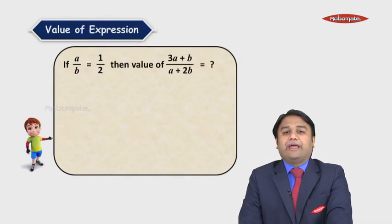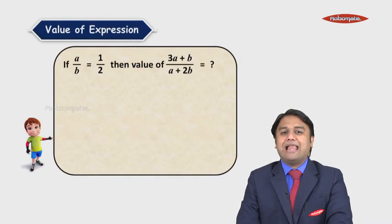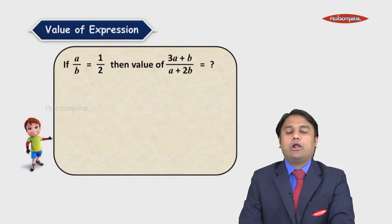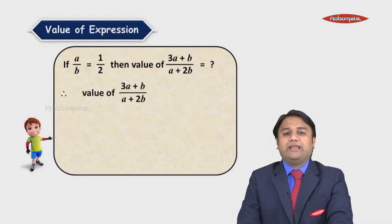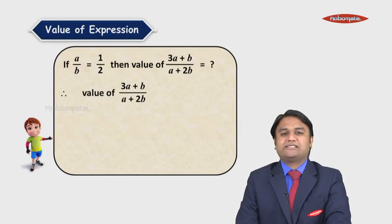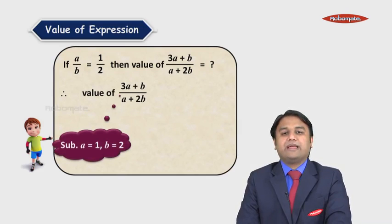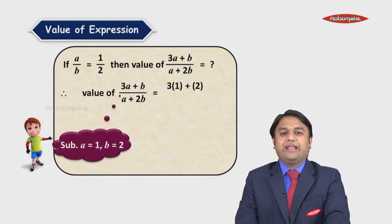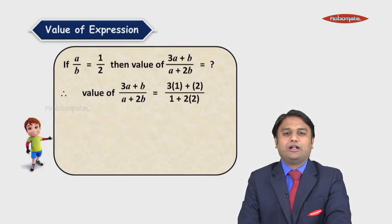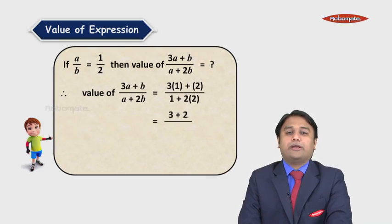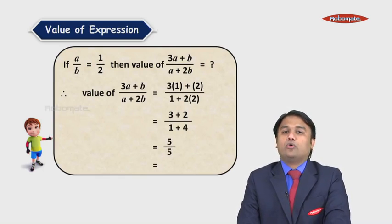Let us now understand a note on value of expressions. If a upon b is equal to 1 upon 2, then the value of (3a + b) upon (a + 2b) is to be found. We substitute a = 1 and b = 2 into this expression. We get (3×1 + 2) upon (1 + 2×2), which equals 5 upon 5, which is equal to 1 is to 1.